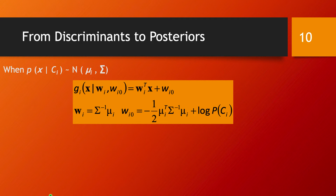This also leads to a discussion about classifying with the sigmoid function. Here we have our classes distributed normally with mean mu_i, which is a vector of d dimensions — the same as our data. We are in the case where all the classes share the same covariance matrix sigma.